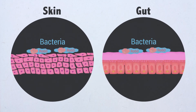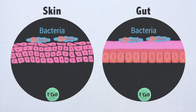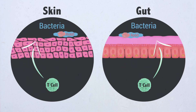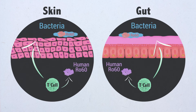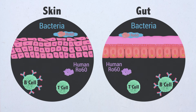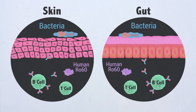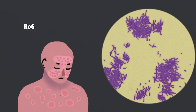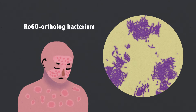We found that common commensal bacteria expressing these so-called Ro60 orthologues can trigger T cells to respond not only to the bacteria, but also to the human Ro60 protein. Ro60 auto-antibodies from lupus patients also bound to the bacterial Ro60 orthologues. We further visualised one Ro60 orthologue bacterium, P. propionicum, in skin lesions of lupus patients.